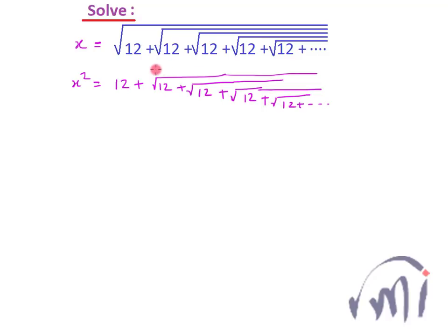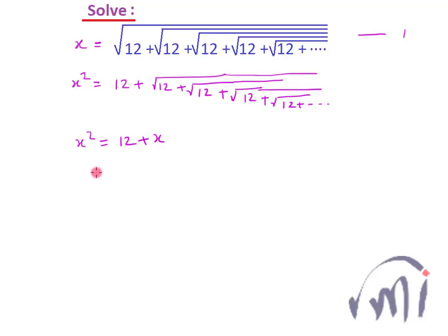So what is this? This is the same thing as the right hand side of equation number one. So if I substitute x in this place, x squared can be written as 12 plus x. And if I rearrange this, it can be written as x squared minus x minus 12 is equal to zero. This is a quadratic equation, and now I'll factorize it.